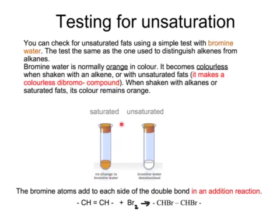So on the left we have the result for a saturated fat or oil — no change to the bromine water. On the right we have the result for an unsaturated fat or oil — here the bromine water has been decolourised because the bromine atoms have joined across each side of the double bond to form a colourless dibromo compound.